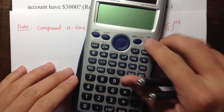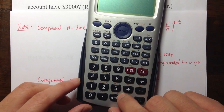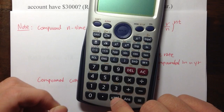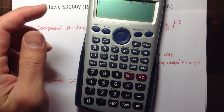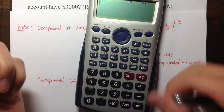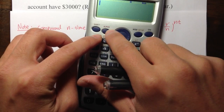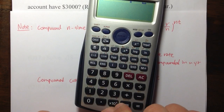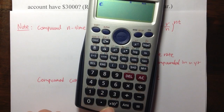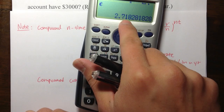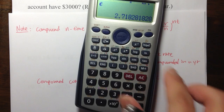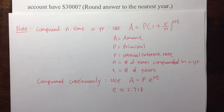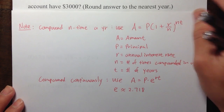The e here is the number approximately 2.718, and you can get it on your calculator. On my calculator, to get e I hit alpha and then the e button, and it shows 2.71828 and so on. It is an irrational number, very similar to pi but they are two different famous numbers.